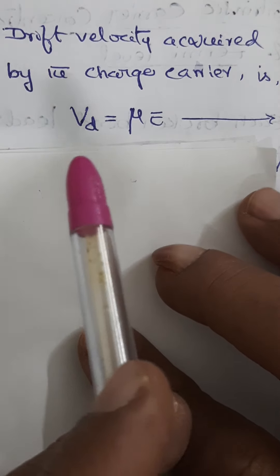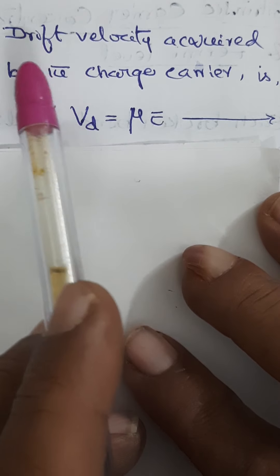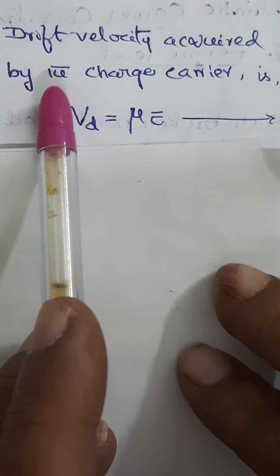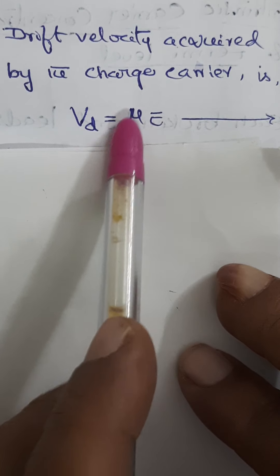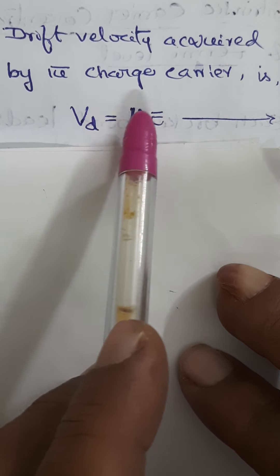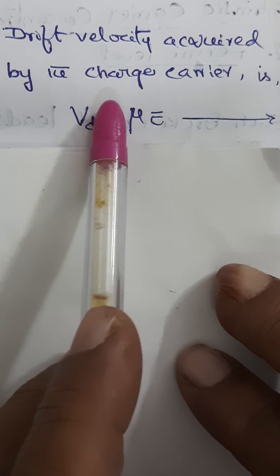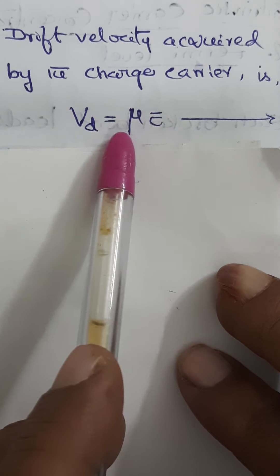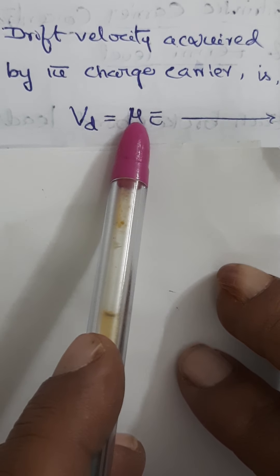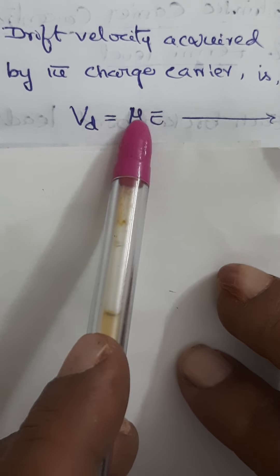Because of the established current and acquired field, drifting takes place. The drift velocity acquired by the charge carrier is directly proportional to the electric field. Replacing the proportionality with an equality sign gives a constant, which we represent as mu — the mobility of charge carriers. Being bipolar, we have two charge carriers: electrons with mobility mu_n, and holes with mobility mu_p. This is equation 1: Vd = mu × E.